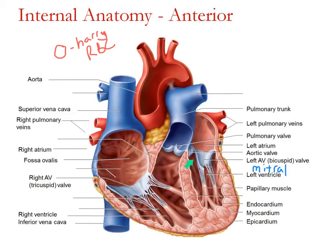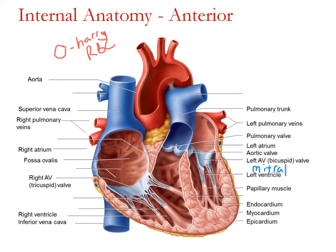Harry swings up through the aortic valve, which allows him to enter the aorta — up into the aortic arch, and then off either to the coronary circulation or to all the systemic arteries to bring oxygenated blood to all the body tissues.